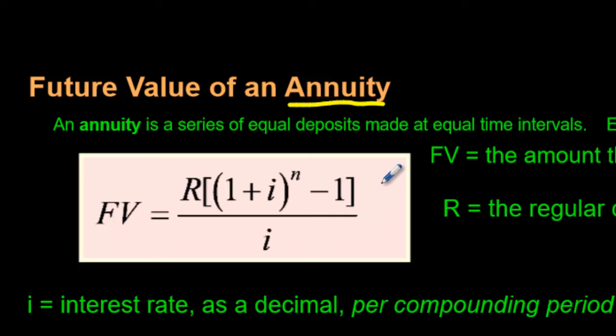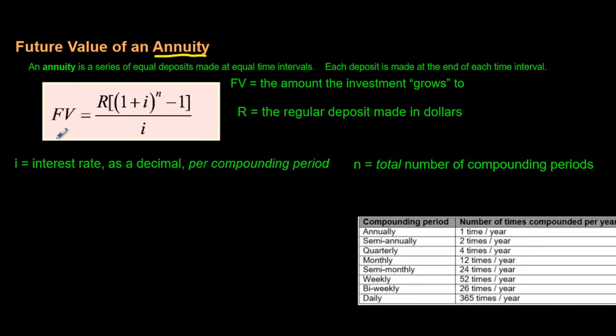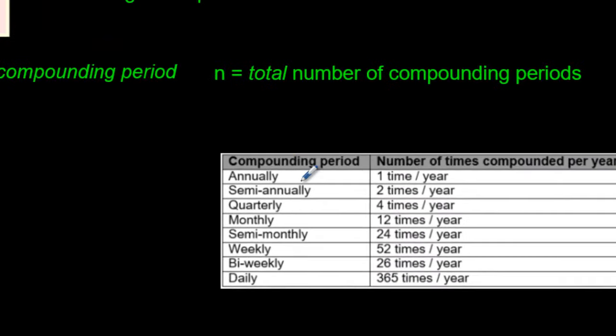So let's look at this formula right here. In another video I have shown people how to do these kinds of questions using something called the TVM solver on a graphing calculator. If you would like to do it that way, feel free to watch that video. In this video we're going to use the formula here that you can see. The FV here stands for future value, how much the investment will grow to in the future. The R is the regular deposit that is being made and the regular deposit could be made annually, look at the chart here, semi-annually, quarterly, monthly. These are all words that people need to memorize.